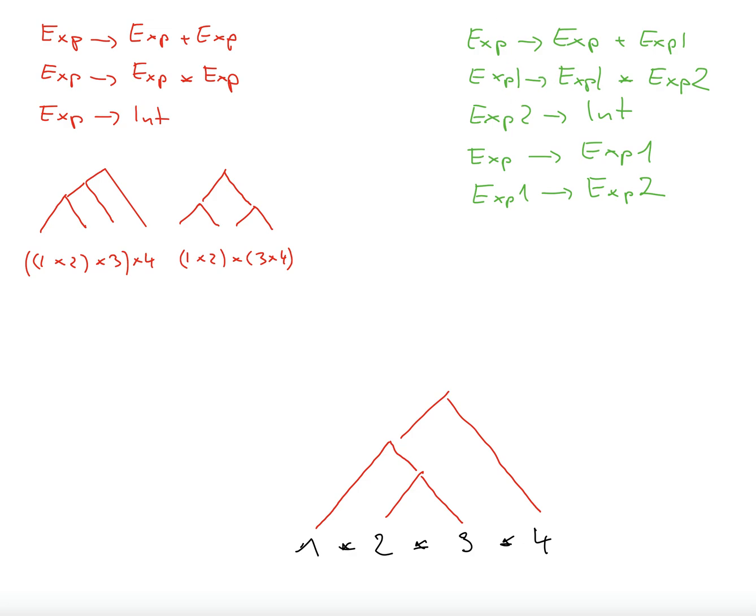So what if we parse 2 times 3 first? So then we can, the second multiplication can multiply the result of 2 times 3 with 1, and then we keep times 4 for the end.